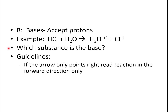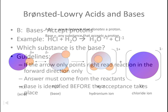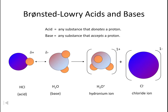Here's our guideline: if the arrow only points to the right, we always read the reaction in the forward direction only. Our answer must come from the reactants, and our base is identified before the acceptance takes place. Here's our hydrochloric acid and water. Our hydrochloric acid gave away its hydrogen to the water, which formed hydronium. Because the acid was donating the hydrogen and the water accepted it, that makes hydrochloric acid our acid and water our base.